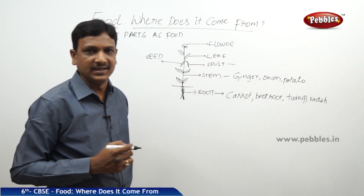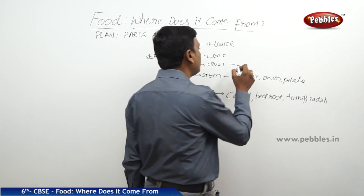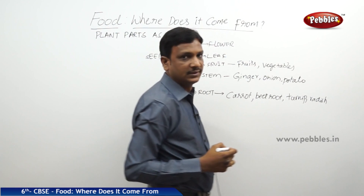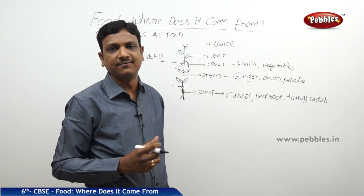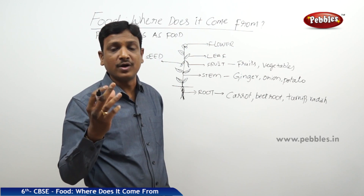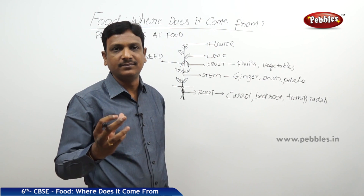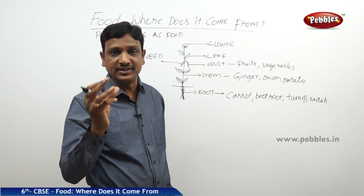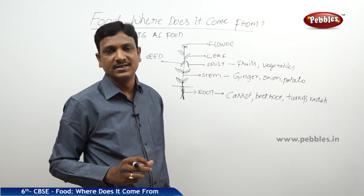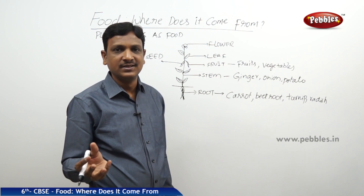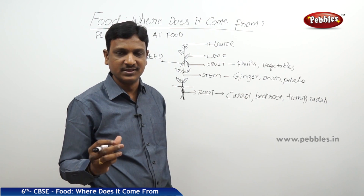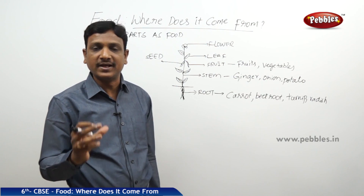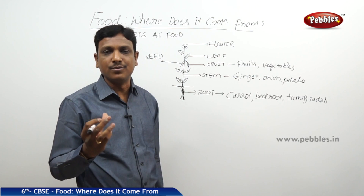Fruit — many of the vegetables are also nothing but the fruits of the plant. Brinjal and tomato are nothing but fruits. Of course they do not have sugars in them, that's why they are not sweet, but technically they are fruits — they are developed from the flower. Apple and mango are fruits with sugars so they are tasty, while brinjal and tomato do not have sugars, so you need to cook and eat them.